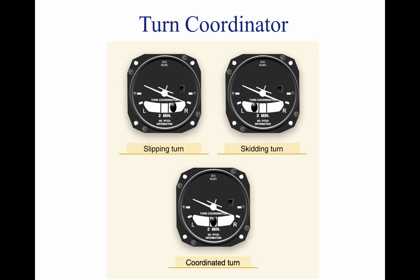There are two marks on each side, left and right, of the face of the turn coordinator instrument. The first mark is used to reference a wings-level zero rate of turn. The second mark on the left and right sides serves to indicate a standard rate turn. A standard rate turn is defined as a turn rate of 3 degrees per second. The turn coordinator indicates only the rate and direction of turn; it does not display a specific angle of bank. The inclinometer is used to depict aircraft yaw, which is the side-to-side movement of the aircraft's nose.